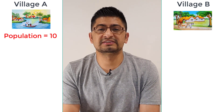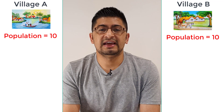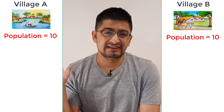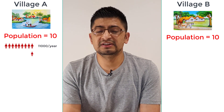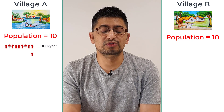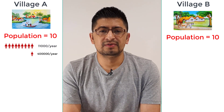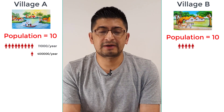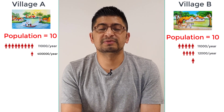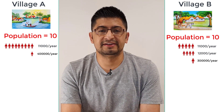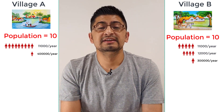On my right-hand side is Village A and on my left-hand side is Village B. The population of both villages is 10. In Village A, 9 people make $11,000 per year and one person makes $400,000 per year. In Village B, five people make $11,000 per year, four people make $12,000 per year, and one person makes $300,000 per year.